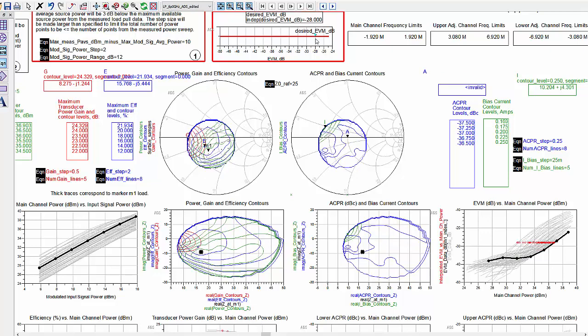For a higher desired EVM, the output power and efficiency are also higher, but the ACPR is higher as well.